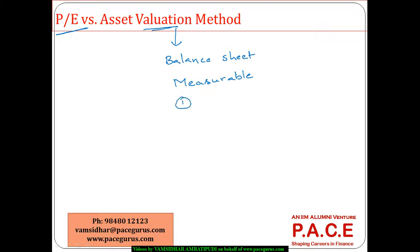The internally generated goodwill is typically omitted. The brand valuation is going to be omitted. The human capital value is going to be omitted. Any other specific skills possessed by the staff which do not make an entry into the financial statement — they get omitted by the asset valuation approach.